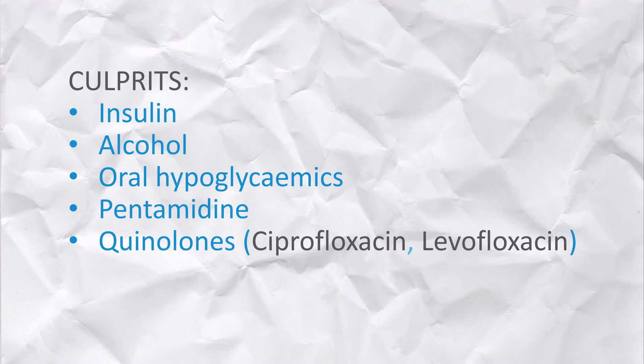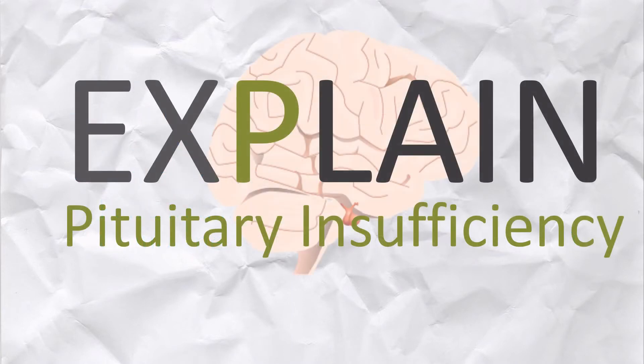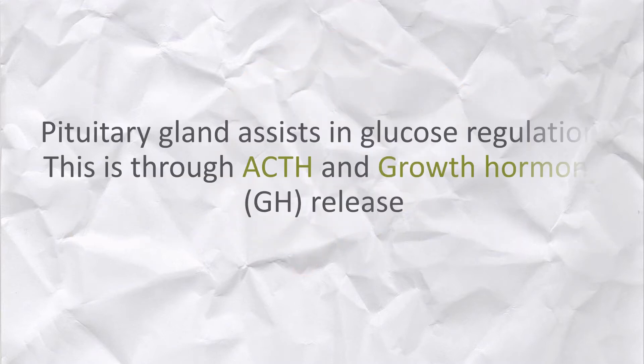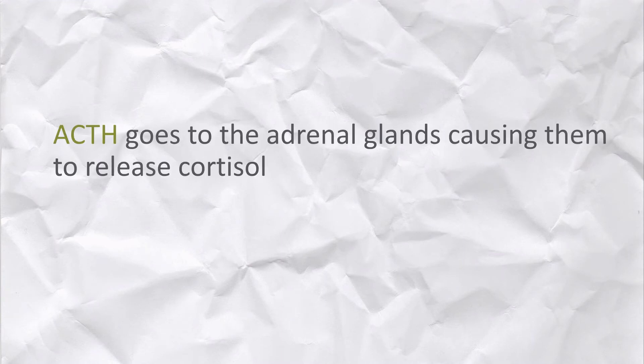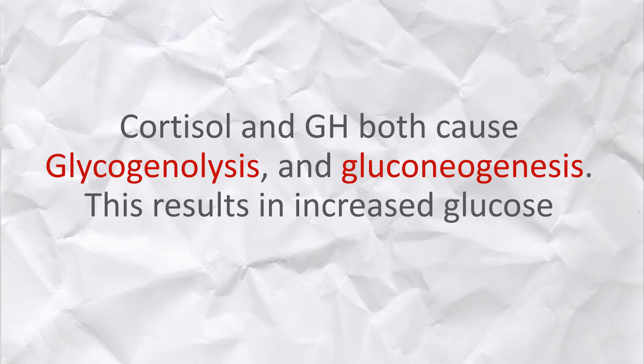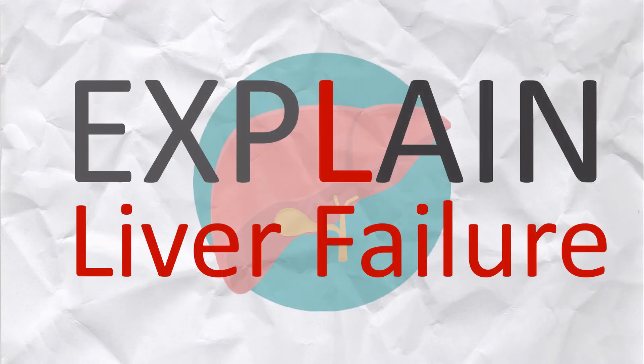The P stands for pituitary insufficiency. The pituitary gland assists in glucose regulation via ACTH and GH release. ACTH causes the adrenal glands to release cortisol. Cortisol and GH both cause glycogenolysis, which is breaking down glycogen, an energy storage molecule, into glucose, and gluconeogenesis, which is forming glucose from other molecules. This boosts glucose, and without a well-functioning pituitary, hypoglycemia can occur.